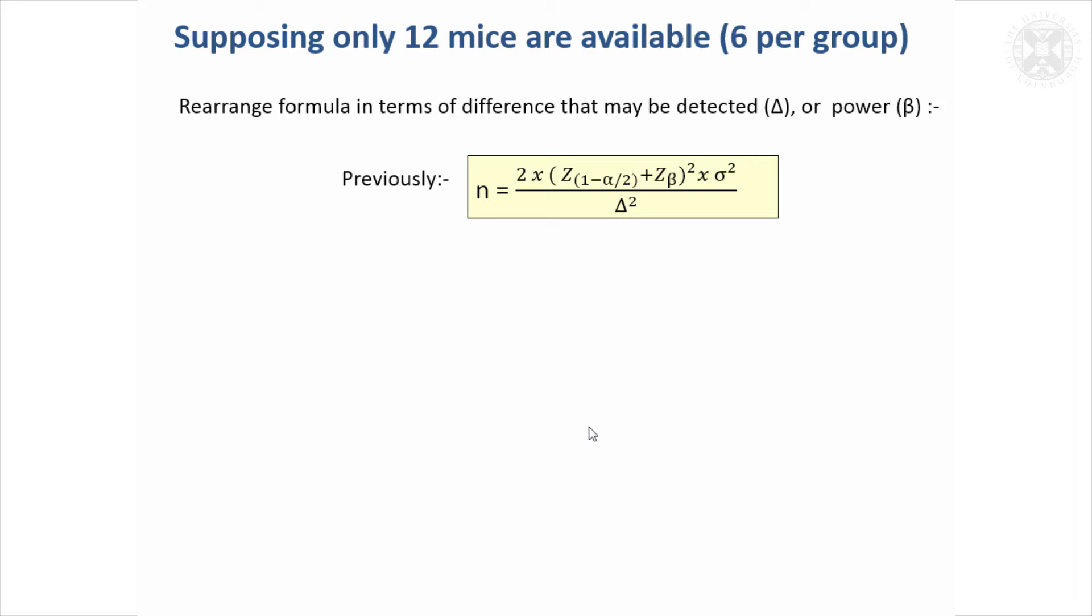To do that, it's possible to turn this formulae around so that it can be rearranged in terms of the difference that you might be able to achieve—this delta—or in terms of how much power you've got to obtain a particular difference. So it's helpful to know that you can do that too.